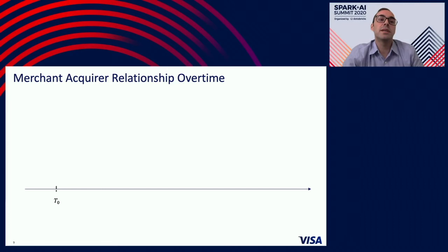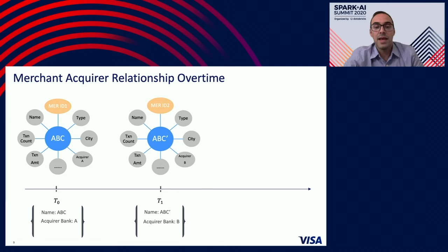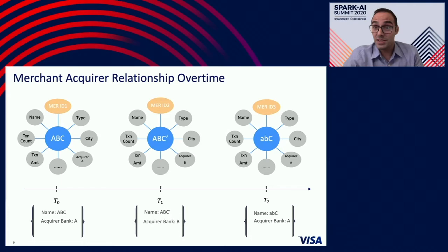Here we demonstrate the merchant-acquirer relationship over time. At time T0, a merchant comes into our system with the name ABC and an acquirer bank A, and gets an ID assigned — MER ID 1. At time T1, the merchant might decide to change their acquirer bank, and at that time it might have a new name, a new acquirer bank, and gets a new ID assigned. At time T3, the merchant might go back to the old acquirer, bank A, and might again have a different name. This shows how a merchant is changing entity in our system, and we don't have a direct relationship with the merchant — a lot of this data we get is through VisaNet data, and we are trying to build this relationship.